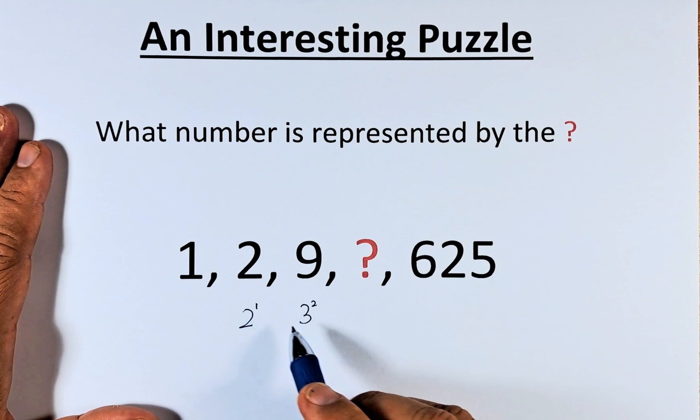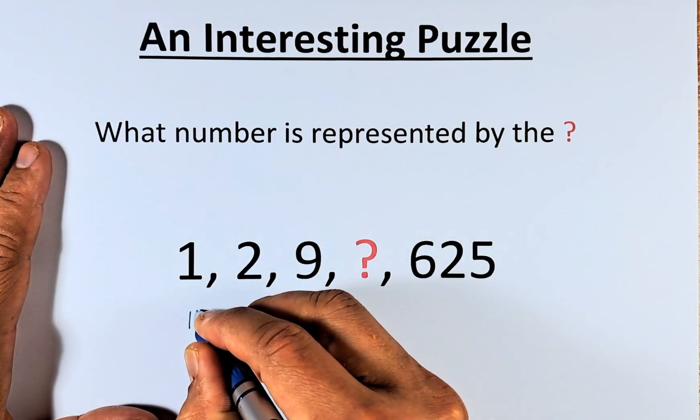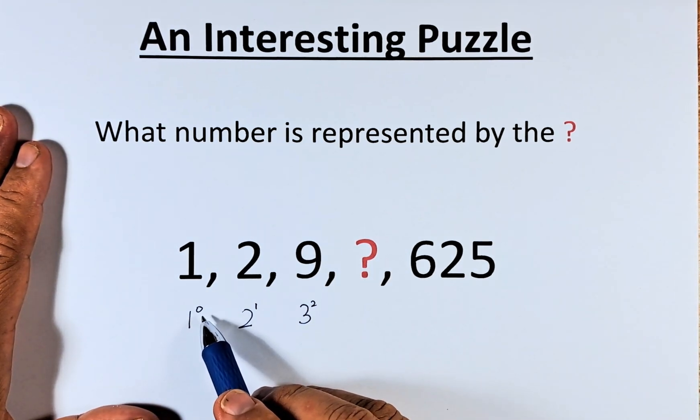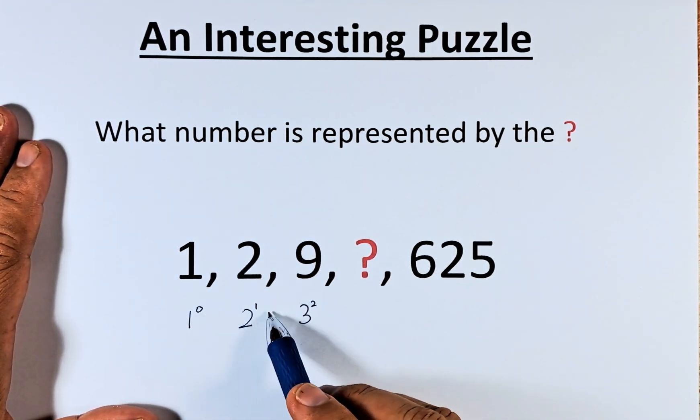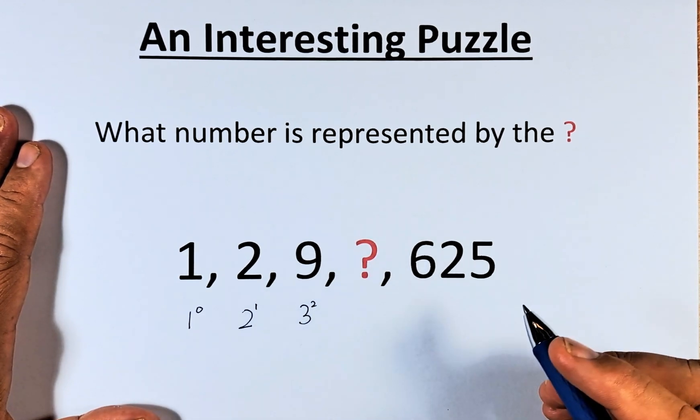So now you can see the pattern: 2 to the power of 1, and then 3 to the power of 2. So 1 is equal to 1 to the power of 0. The power increases by 1, and the base is also increasing by 1.